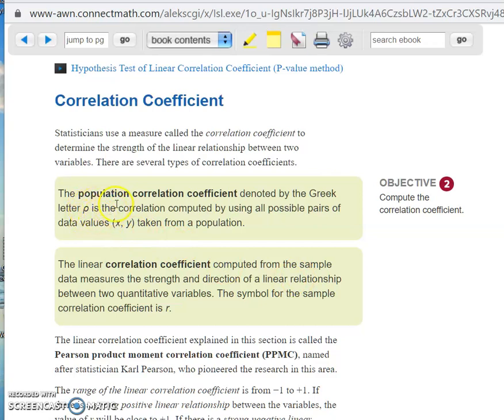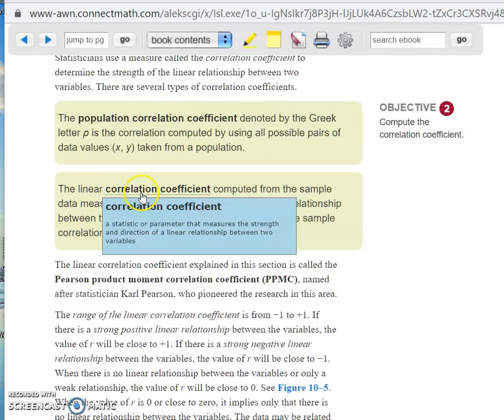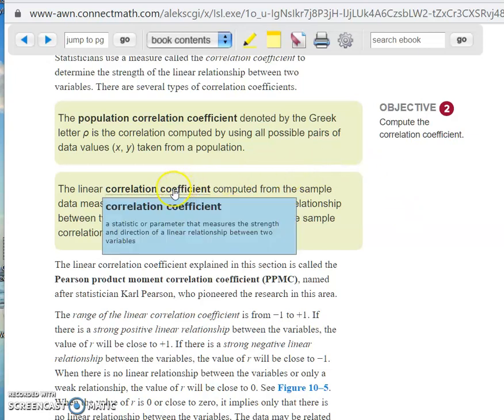And I guess I need to revise my previous comment. Here's the definition of rho. It's the population correlation coefficient. It's computed by using all possible pairs of data values and taken from a population. I don't see us using that at all. For example, this is R, the correlation coefficient, and that measures the strength and the direction. Is it a really strong correlation, and is it a positive or is it a negative? So that's what we're going to be actually looking at, is a correlation coefficient.